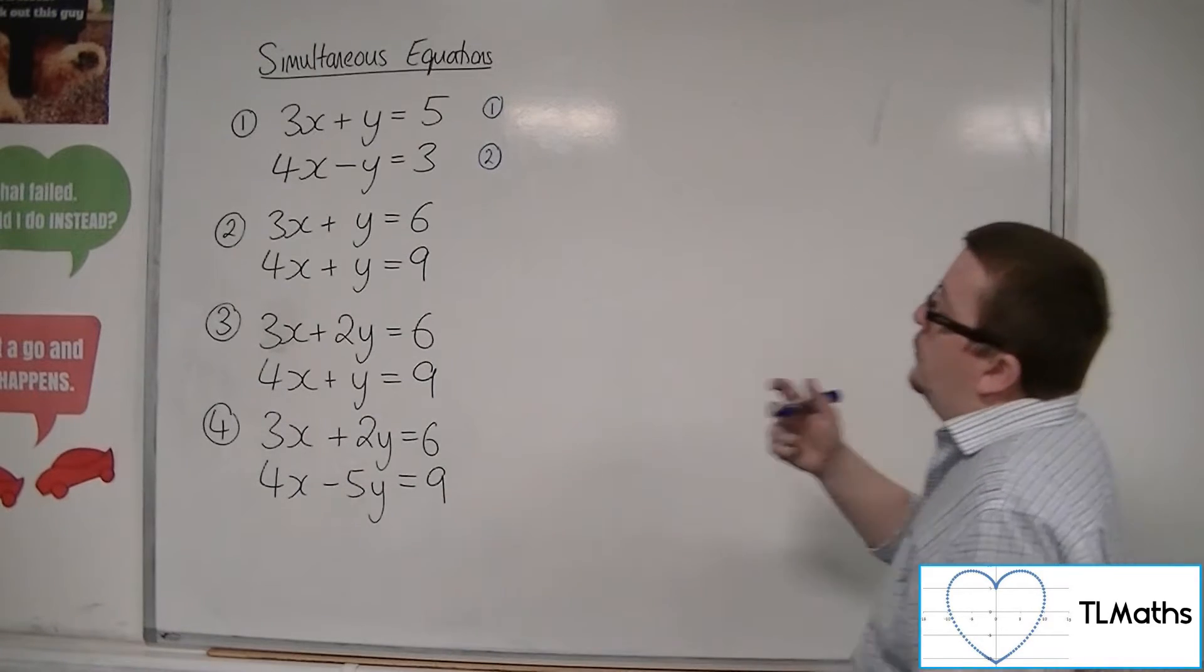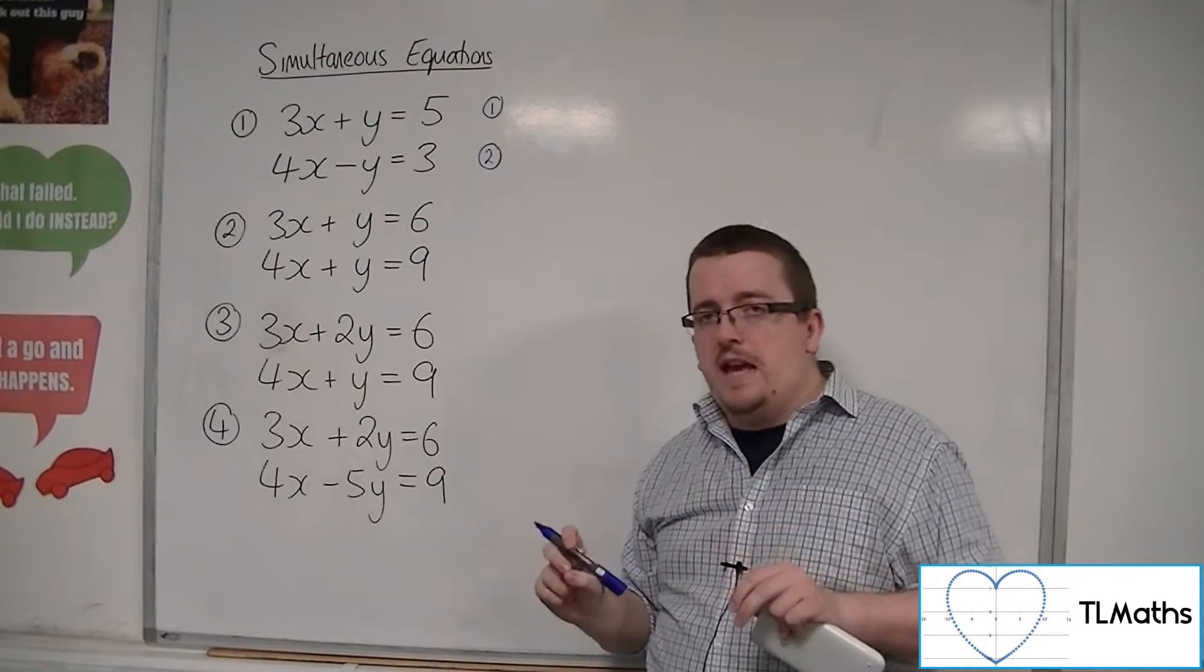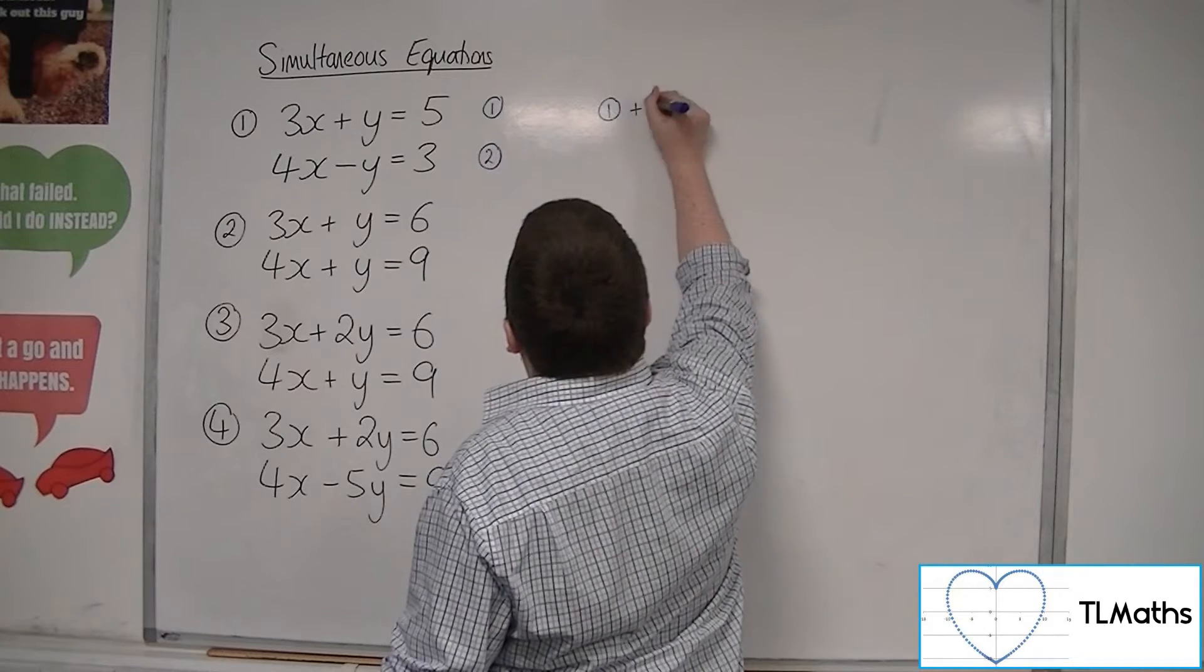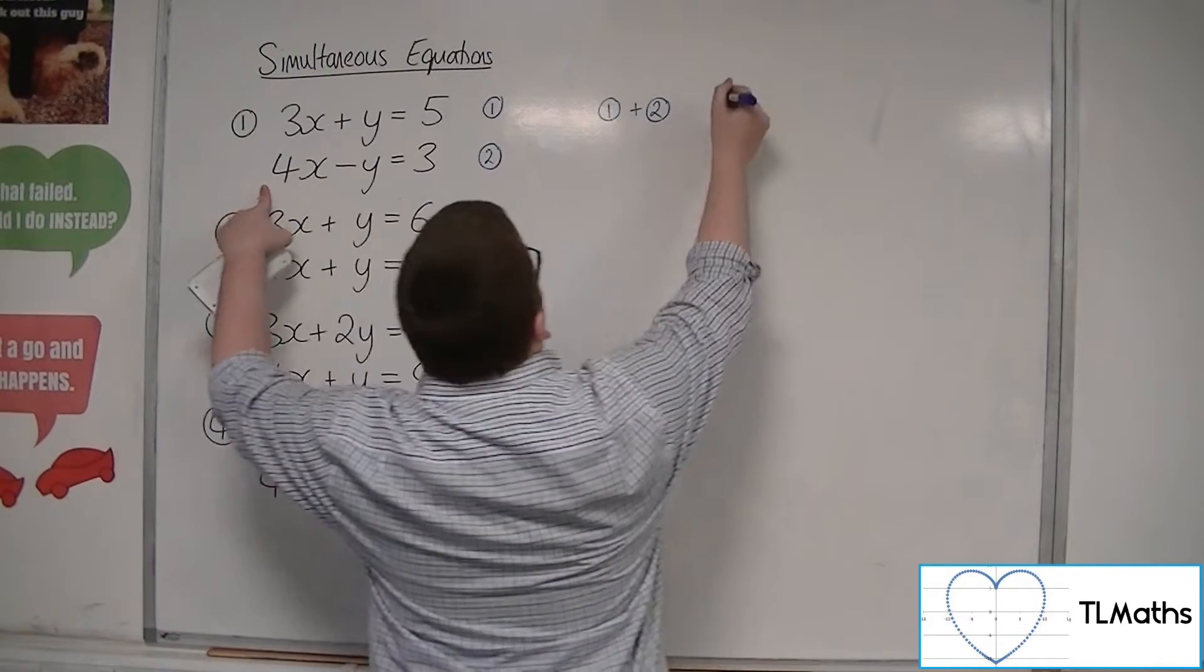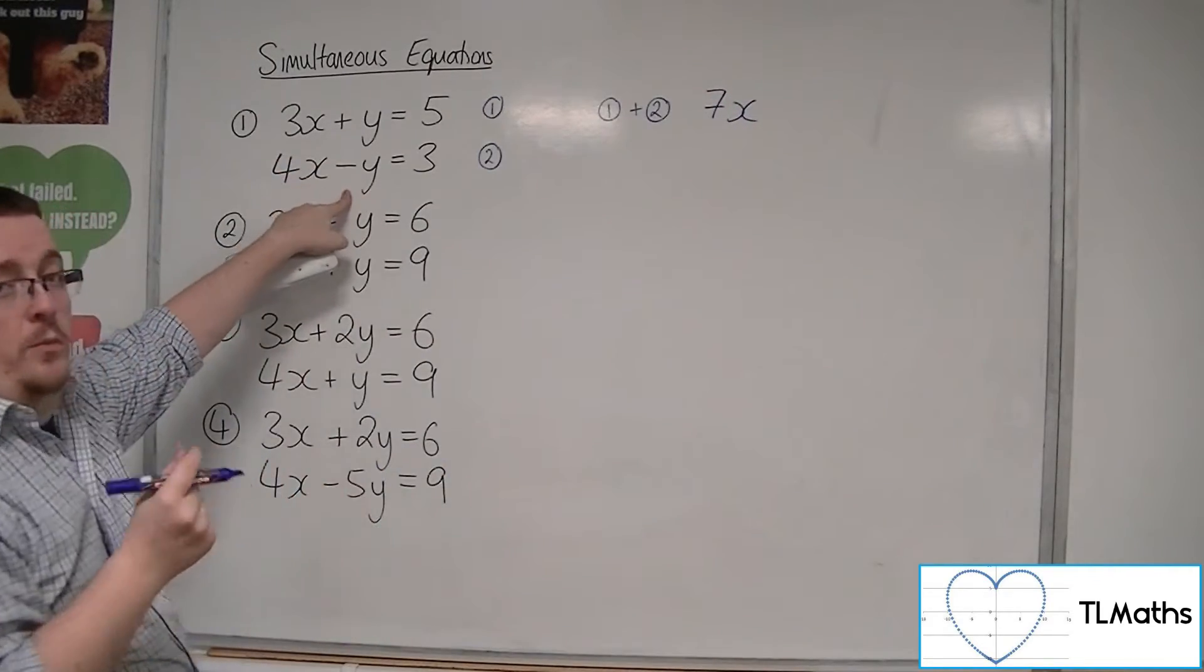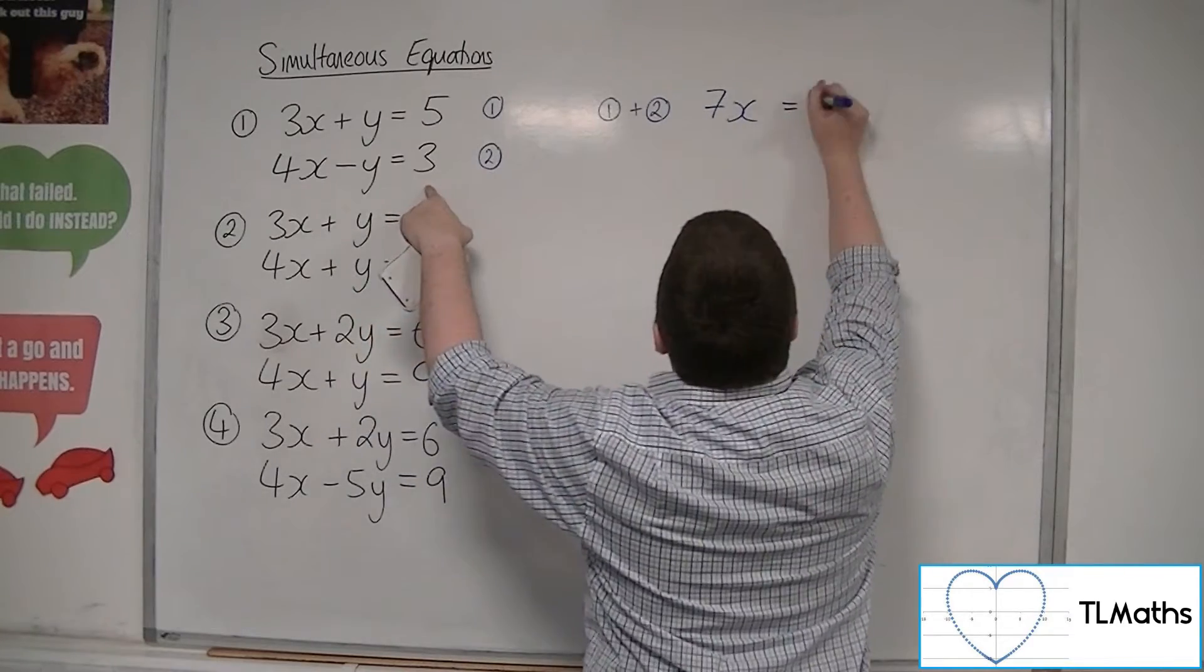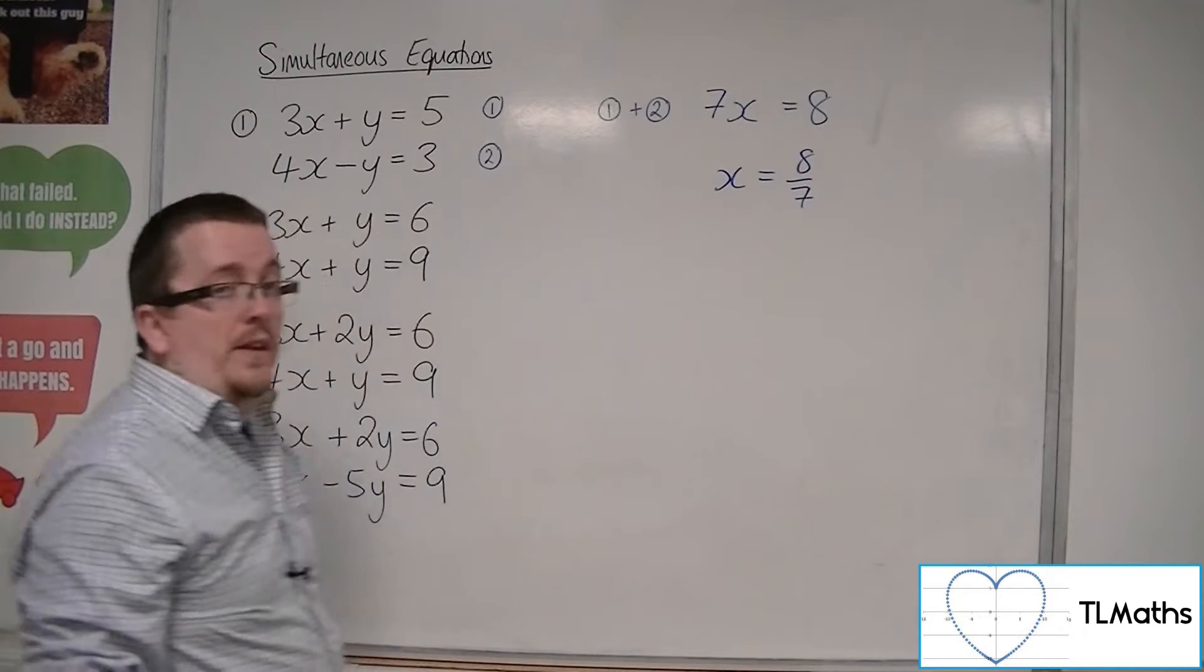And for this first one, what I can see is that I've got a plus y and a minus y. So if I add the two equations together, then it will eliminate the y's for me. So I'm going to go with equation 1 plus equation 2. We have 3x plus 4x, it makes 7x. y plus minus y will cancel, so I'm eliminating the y's. And 5 plus 3 is 8. So divide both sides by 7, and so x is 8 sevenths.